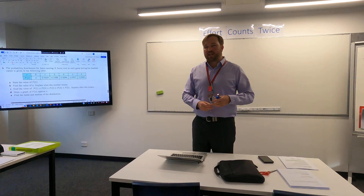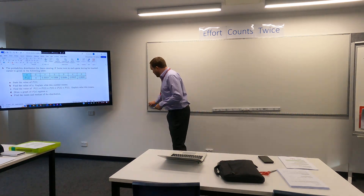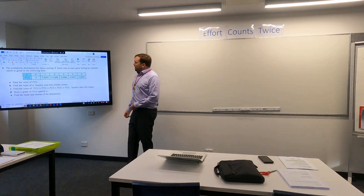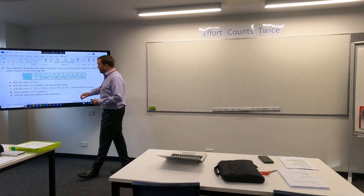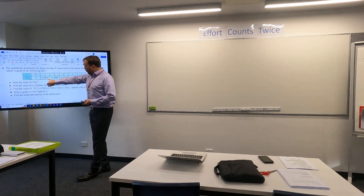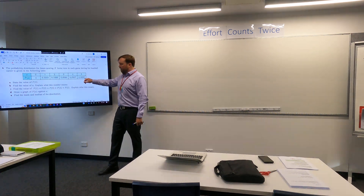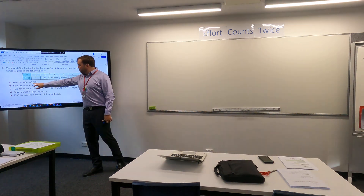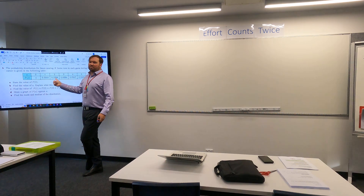Let's do a quick example. These examples are going to seem very basic to start with, but it's about setting up the terminology. The probability distribution for Jason scoring X home runs during each game of his baseball career is given in the following table. The probability of scoring one home run is 0.3333, then probability of scoring two, three, four, five home runs, etc. So what's the value of P2 — the probability of scoring two runs? 0.5188.